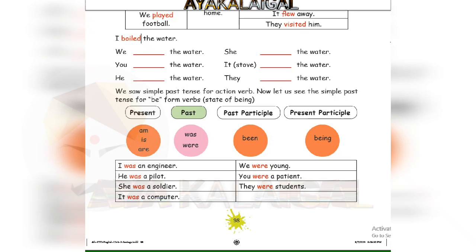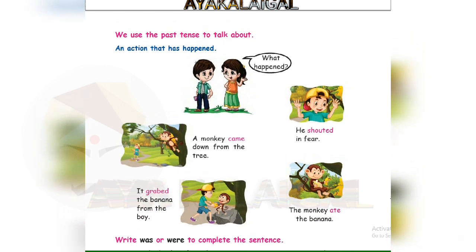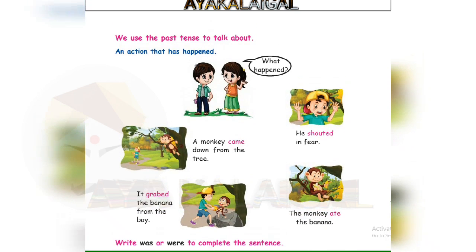Next, we use the past tense to talk about an action that was over. For example, what happened? A monkey came down from the tree — 'come' becomes 'came' in past tense. He shouted in fear — 'shout' becomes 'shouted' in past tense.